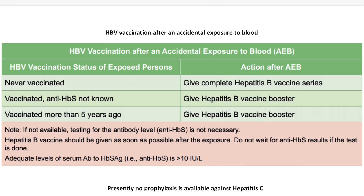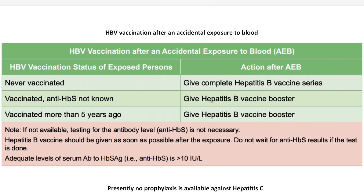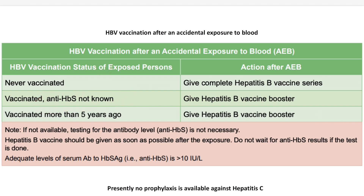Whenever there is an HIV exposure, there is a subsequent risk of contracting HBV and HCV as well. You need to know the status of the patient for HBV and HCV — we test for HIV, HBV, and HCV prior to surgery to prevent transmission. If the exposed person — the doctor or nurse — has never been vaccinated with HBV, a complete HBV vaccination series of three doses must be given.